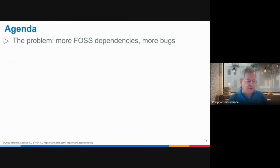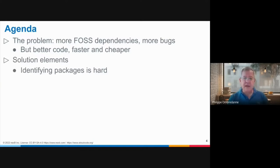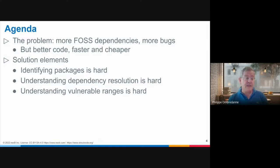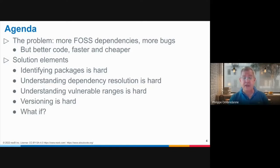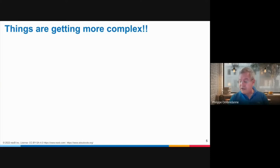Having more dependencies is great — we can build software better, faster, and more efficiently — but we also have more bugs and more vulnerabilities. The difficulty of identifying packages is one key topic. Understanding dependency resolution is difficult too. Understanding ranges of vulnerabilities or version ranges as they apply to packages is a problem. Versioning is hard, and we're going to explore solutions with package URL and version range specification. Things are getting more and more complex.